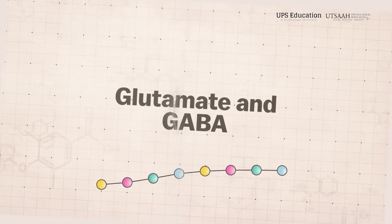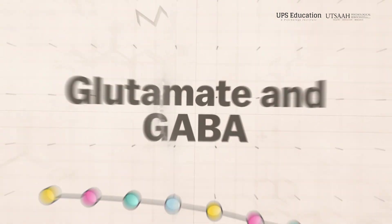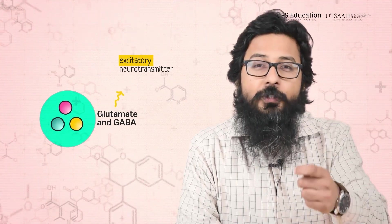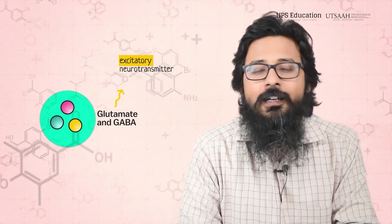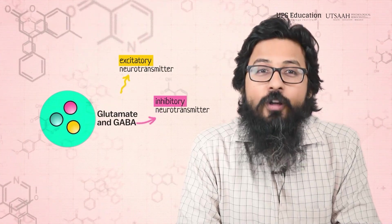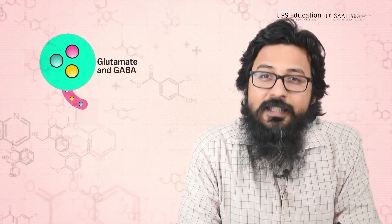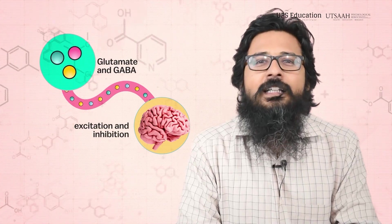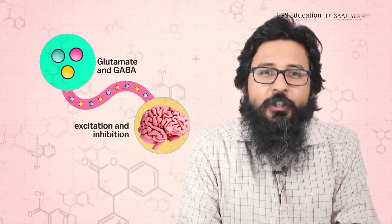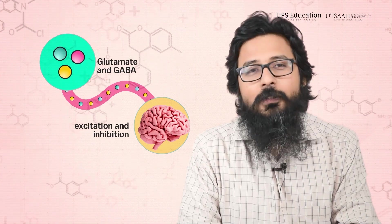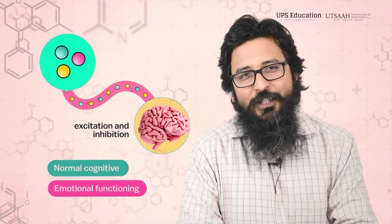Third: glutamate and GABA. Glutamate is an excitatory neurotransmitter, while gamma-aminobutyric acid — GABA — is an inhibitory neurotransmitter. Both amino acids are essential for maintaining the balance of excitation and inhibition in the brain, which is crucial for normal cognitive and emotional functioning.